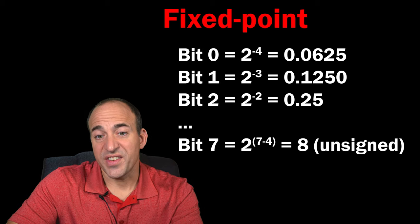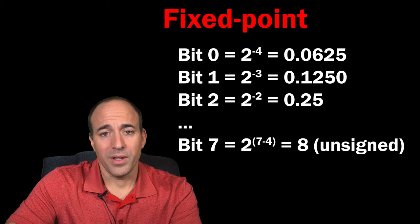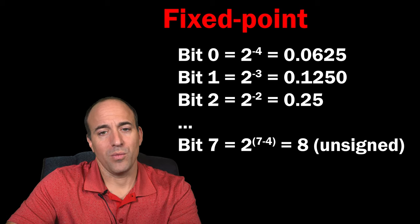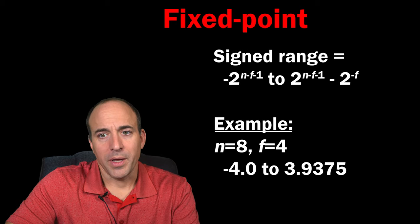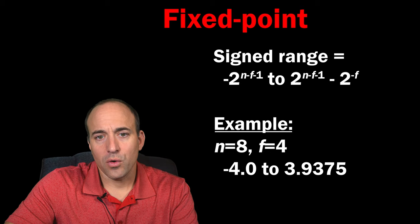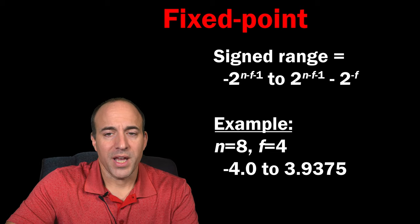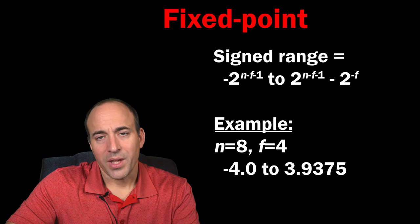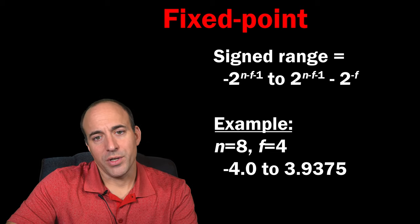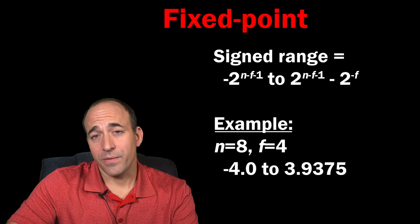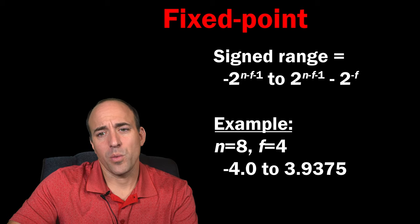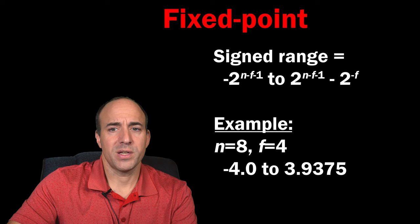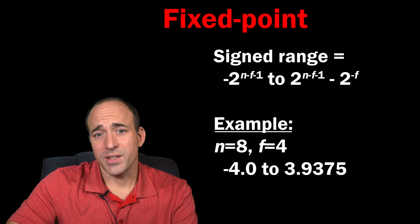Assuming the value is unsigned; if it's a signed value, then the most significant bit would be the sign bit. For signed fixed-point values, you would use 2's complement, in which the negated form of the value is obtained by complementing all of the bits and adding 1 to the least significant bit position, which in the case of fixed-point numbers carries a weight of 2 to the negative f power, where f is the number of fractional bits. So in this example that would be 2 to the negative 4th power, or 1/16.